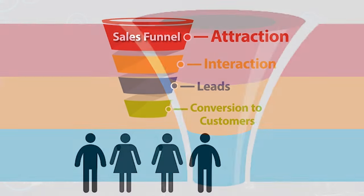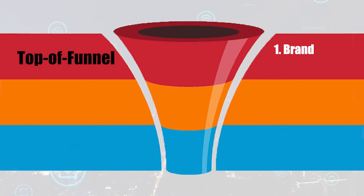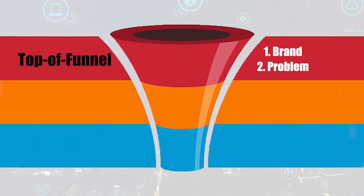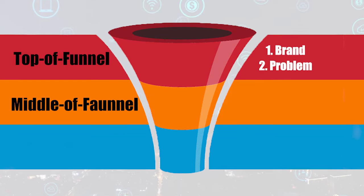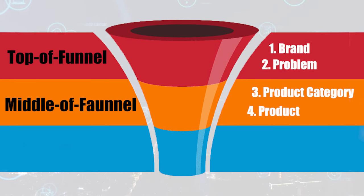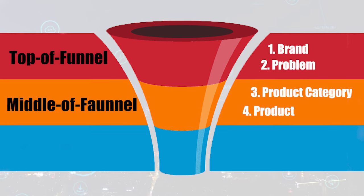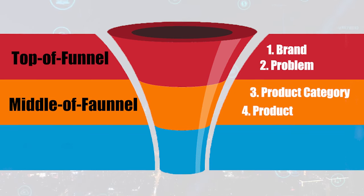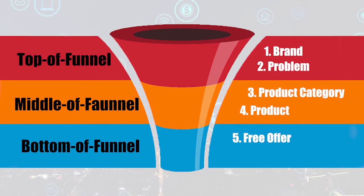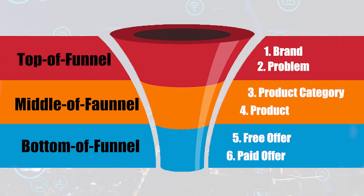So what are those six things? At the top of funnel, we have number one, the brand, and number two, the problem — we need to promote the brand but also the problem that we solve. In the middle of the funnel, we have three, the product category, and four, the product. Not only do we have to sell our product, but sometimes we just need to convince people that the category at large is the solution to their problem. At the bottom of funnel, we have five, your free offer — something like a consultation or a demo — and six, your paid offer, the thing that you're actually selling.